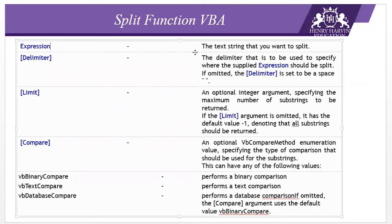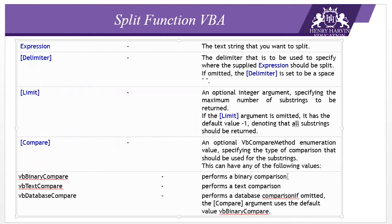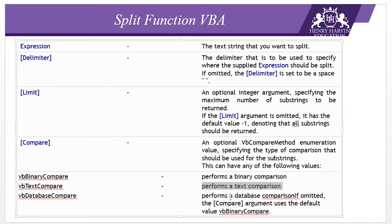The expression is the text to split, and the delimiter can be an underscore, hyphen, or any separator. The compare argument has three options: vbBinaryCompare (case-sensitive), vbTextCompare (text-by-text), and vbDatabaseCompare. If omitted, the default is binary compare.